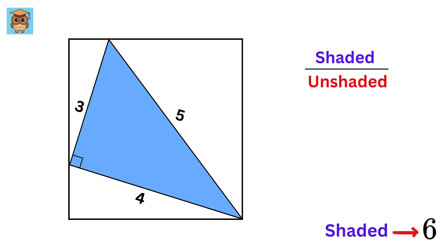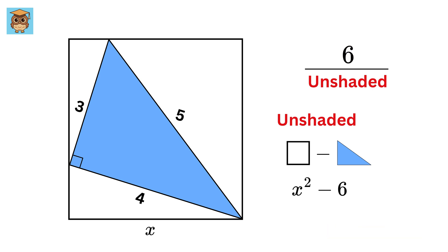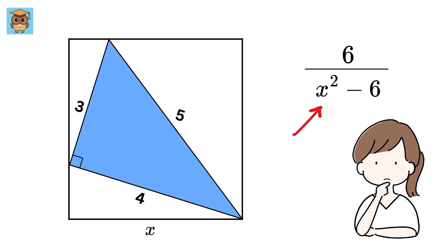Now, let us label the side of this square as X. So, the area of the unshaded region will be the same as the area of this square, which is X square, minus the area of this blue region, or six. Thus, the required ratio will be the area of this blue region, or six, over the area of this unshaded region, or X square, minus six. So, we just need to find the value of this X, and we are done.